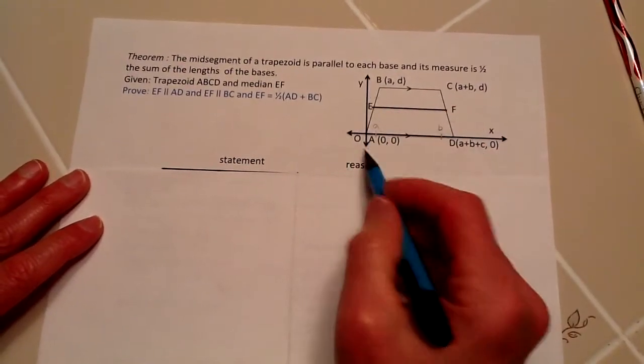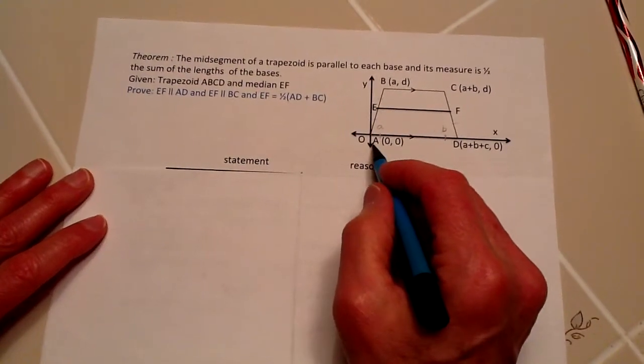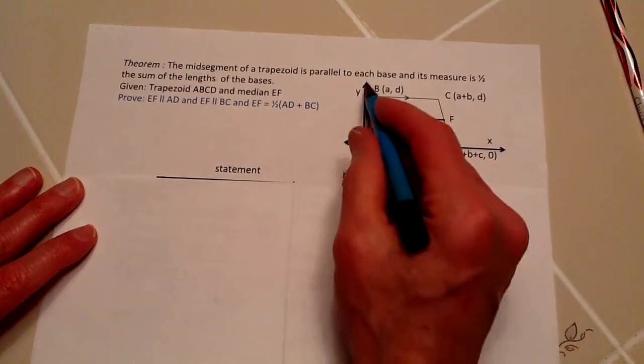I put this on a coordinate grid. This point right here is at the origin, which is (0,0). A is at the origin (0,0), this being the x-axis, this being the y-axis.